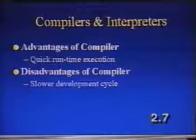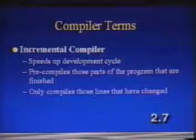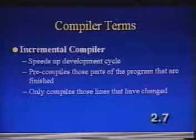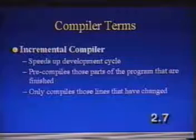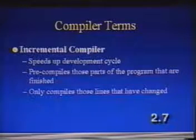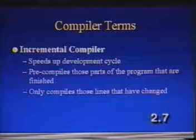The advantage of the compiler is that you get quick runtime. However, the disadvantage is it slows you down as a developer. Obviously, the best of both worlds would be to have an interpreter while you're developing, but then have a compiler when you're ready to put out your final application to your end user — and that's exactly what a lot of vendors are doing today. Some of the things these vendors have come up with are incremental compilers. These speed up your development cycle by pre-compiling parts of the program that are finished. As soon as you finish one section, it will compile it in the background, and after that it will only compile those lines that you go back and change.